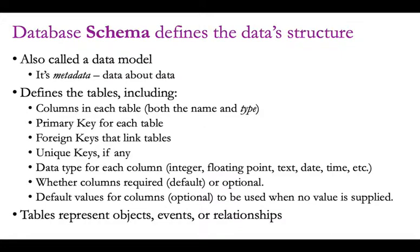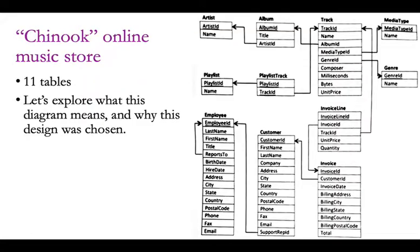Sometimes columns are optional, sometimes required — that's a feature of the data schema. We can also have default values for columns in some cases. Generally, the tables we're defining either represent objects, events, or relationships, and through examples we'll get a better idea of what that means and how to design database schemas.